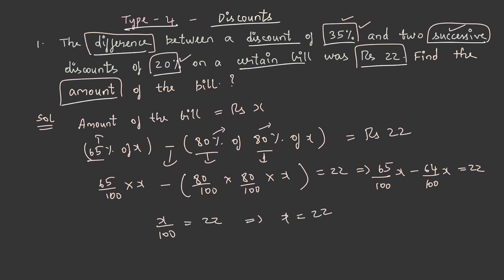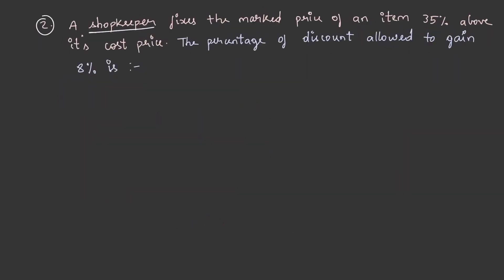A shopkeeper fixes the marked price of an item 35% above its cost price. The percentage of discount allowed to gain 8 percent is...